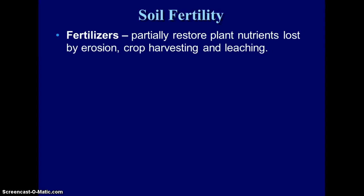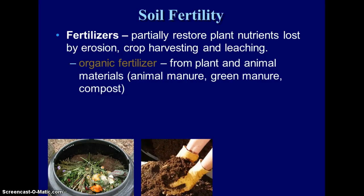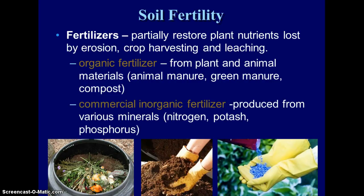Soil fertility can be restored using fertilizers when nutrients are lost by erosion or leaching. Organic fertilizers use plant material — green manure — animal manure, or compost, where biodegradable items like food scraps and paper are allowed to partially decompose. Inorganic fertilizers have no organic material; they supply needed nutrients like nitrogen, potassium, and phosphorus, but lack the organic material that helps absorb water and increases overall soil quality.